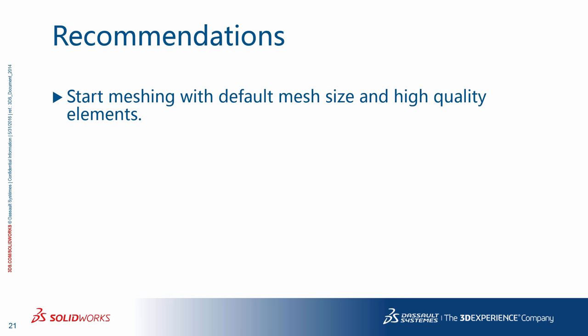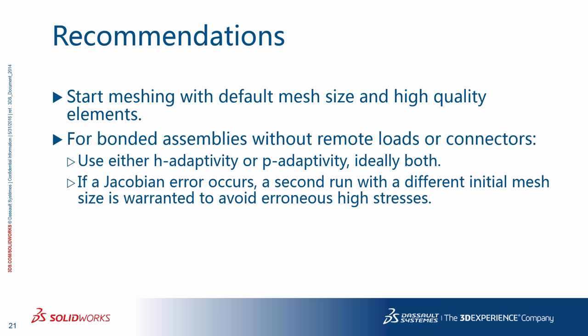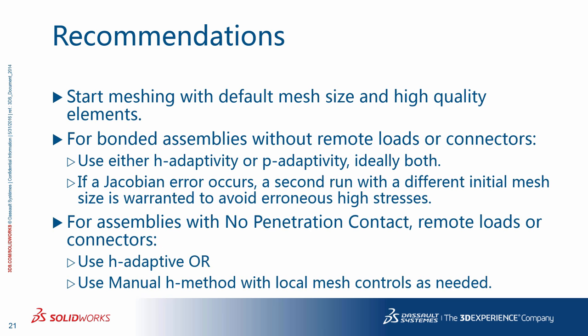A couple of recommendations: start meshing with default mesh size and high-quality elements. For bonded assemblies without remote loads or connectors, use either H-adaptivity or P-adaptivity — ideally both — and compare the results. If a Jacobian error occurs, a second run with a different initial mesh size is warranted to avoid erroneous high stresses. For assemblies with no-penetration contact, remote loads, or connectors, use H-adaptive or the manual H-method with local mesh controls as needed.